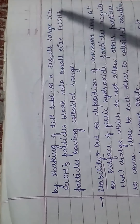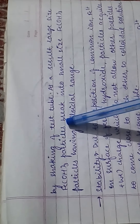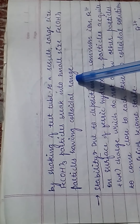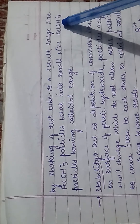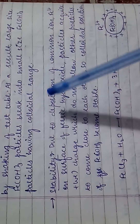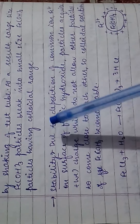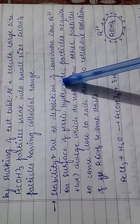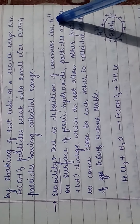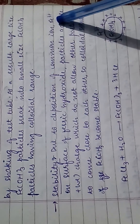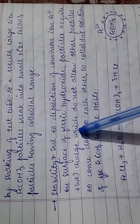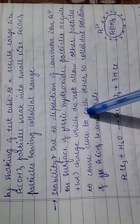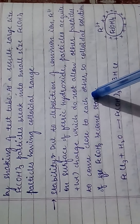As a result of shaking, large-size Fe(OH)3 particles break into small-size Fe(OH)3 particles having colloidal range. The colloidal solution is stabilized due to deposition of common ion Fe3+ on the surface of ferric hydroxide particles. All Fe(OH)3 particles acquire positive charge, causing repulsion between particles.